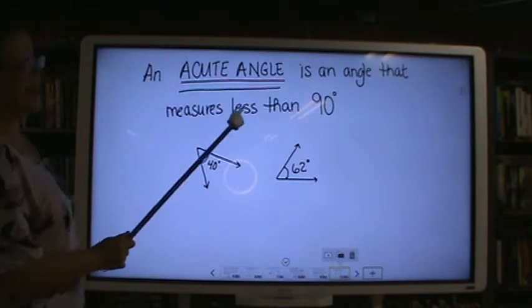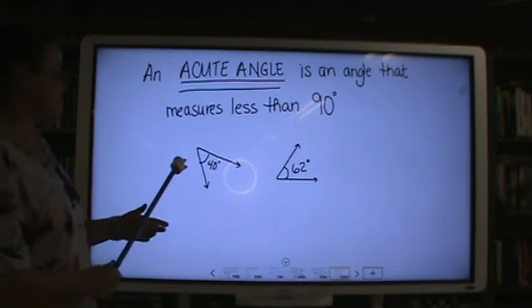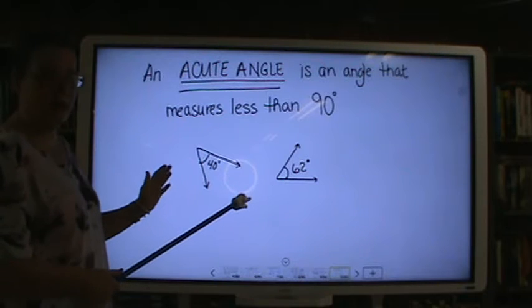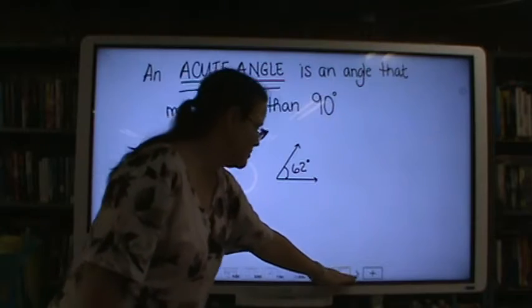An acute angle is an angle that measures less than 90 degrees. Anything between 0 and 90 could be called acute angle. This one is a 40 degree angle and this one is a 62 degree angle.